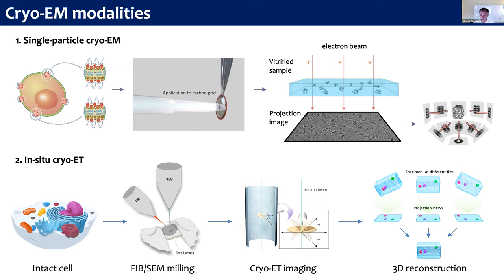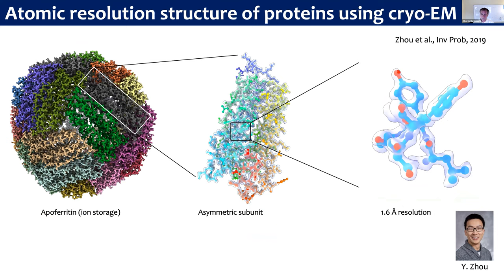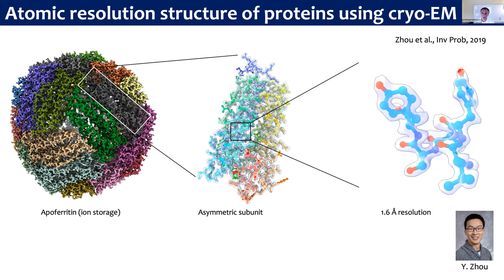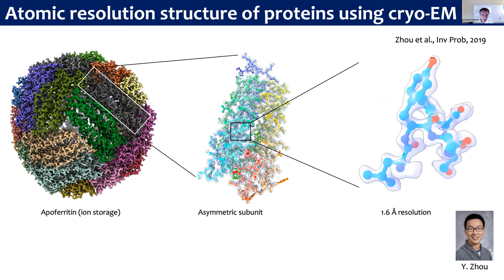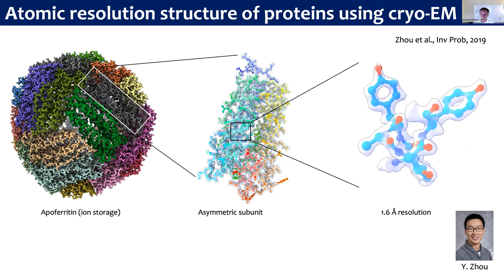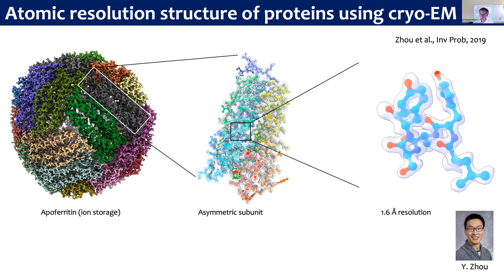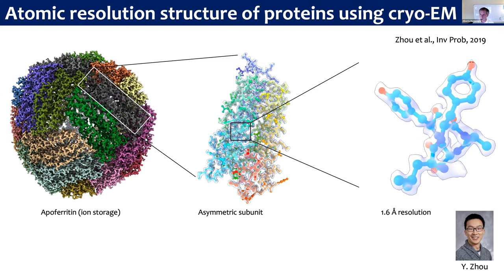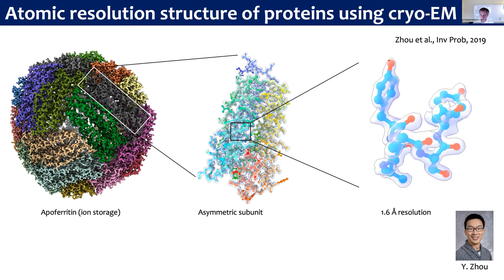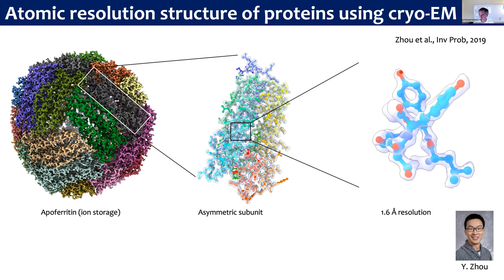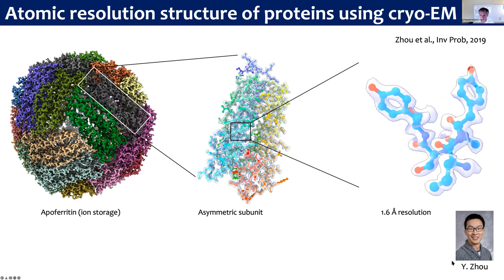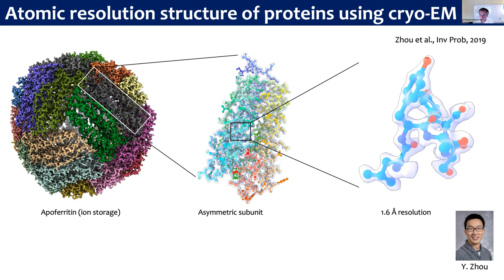For single particle cryo-EM, if you collect enough data and your protein is very stable, you can get to very high resolution. I'm showing a napoferritin structure, which is the iron storage protein that we solved a couple of years ago in the lab to 1.6-Angstrom resolution, where you can start to see the contours of individual atoms. This is nowadays commonplace in cryo-electron microscopy for very stable proteins. This is work that a postdoc in my lab, Yi Su, did.